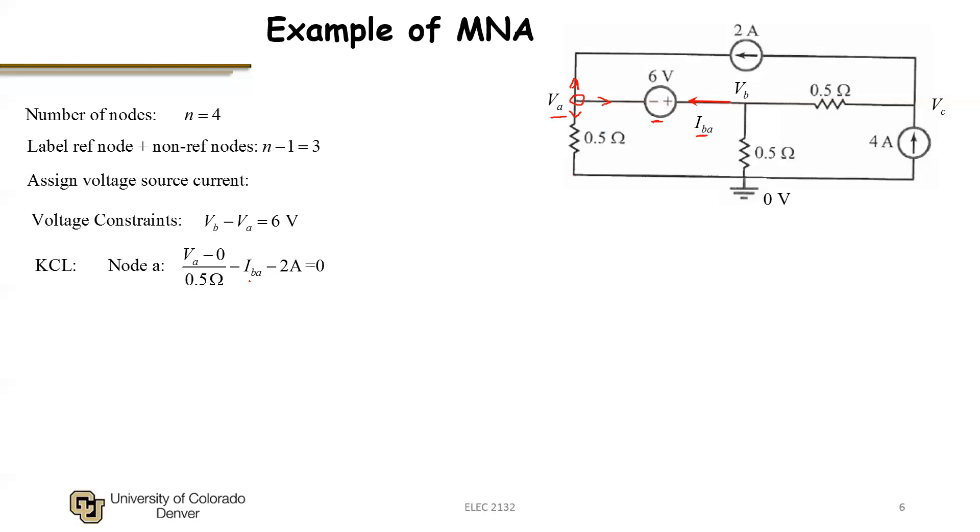And these all sum to zero. So the difference in the MNA now is I can write down the current of the voltage source as an unknown. Here is minus I_BA flowing to the right.